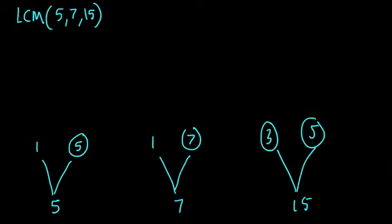So now, all we have to do is find a multiple that all these numbers go into. And how can we do that? Well, I know that whatever the multiple is of these three numbers needs to include at least 5, at least 7, and at least 3. I don't need to include this 5 a second time because I've already dealt with it here.